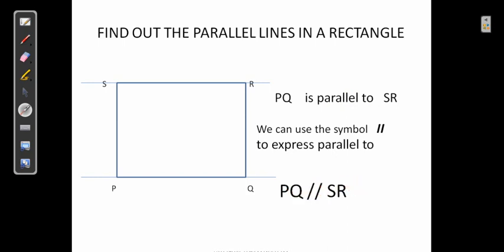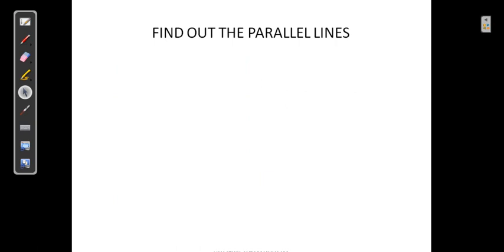The other pair of parallel lines in the rectangle is PS and RQ. We can call the line PS or SP, and the other line RQ or QR. So we can say PS ∥ QR.